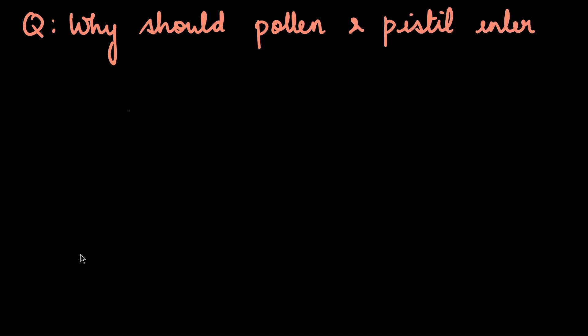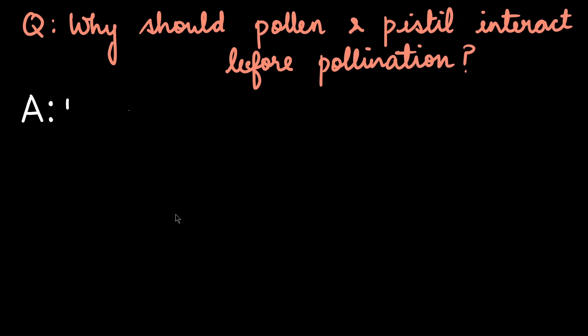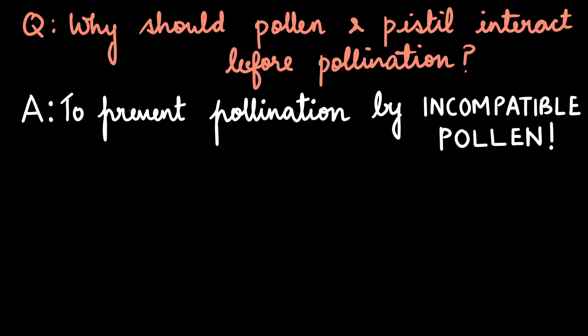So the question is, why should there be an interaction between pollen and pistil before the actual pollination process? The answer is that the flower wants to prevent pollination by incompatible pollens. There are two situations where a flower can consider a pollen to be incompatible.